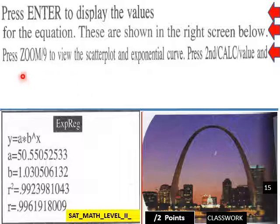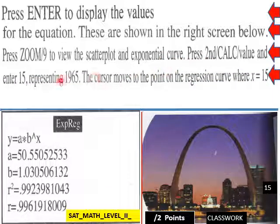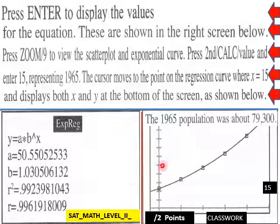And once you do that, press zoom, zoom nine to view the scatter plot and exponential curve. Press second calc value and enter 15 representing 1965. The cursor moves to the point on the regression curve where x equals 15. And this is where it should look. X equals 15 on this curve here displays both x and y at the bottom of the screen as shown below. When you enter 15, you should get this population here, 79,300. So when x equals 15, y should equal 79,300.